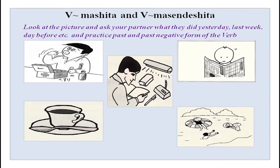We have also done mashita and masen deshita. You can look at these pictures and ask your partner what they did yesterday, last week, or the day before, and practice past and past negative forms of the verb. This gentleman is having his medicine — kesa kusuri wo nomimashita ka? Hai, kusuri wo nomimashita. Kinou kusuri wo nomimashita ka? If he did not, kinou kusuri wo nomimasen deshita.